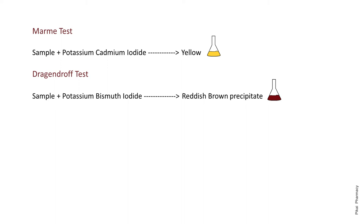Fourth comes the Marmé test. The reagent for the Marmé test is potassium cadmium iodide, shortly known as Marmé reagent. When the sample reacts with potassium cadmium iodide, it gives a yellow color, which indicates a positive Marmé test — meaning the sample is an alkaloid or contains alkaloid.